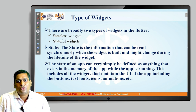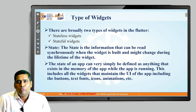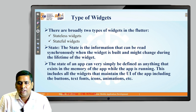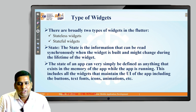We are moving to the next point: types of widgets. There are 2 types — stateless widgets and stateful widgets. The important terminology here is state. The state is information that can be read synchronously when the widget is built and might change during the widget's lifetime. The state of an application includes anything that exists in memory while the app is running, including buttons, text, fonts, icons, and animations.